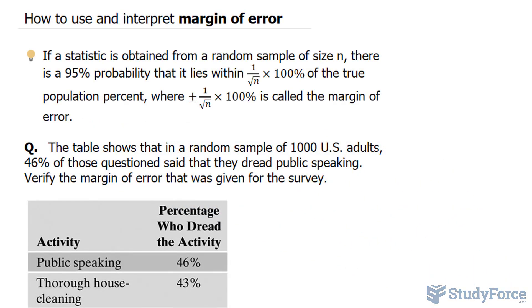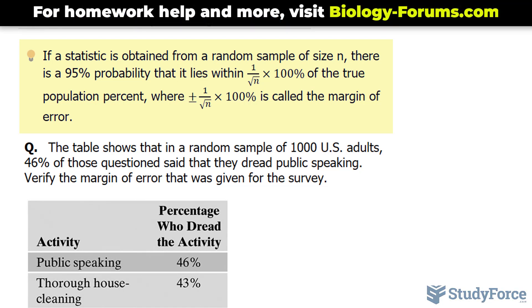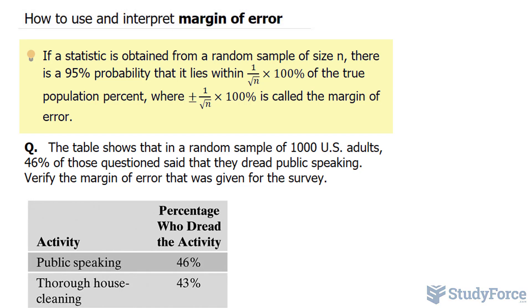In this lesson, I'll show you how to use and interpret margin of error. If a statistic is obtained from a random sample of size n, there is a 95% probability that it lies within 1 over the square root of n times 100% of the true population percent.